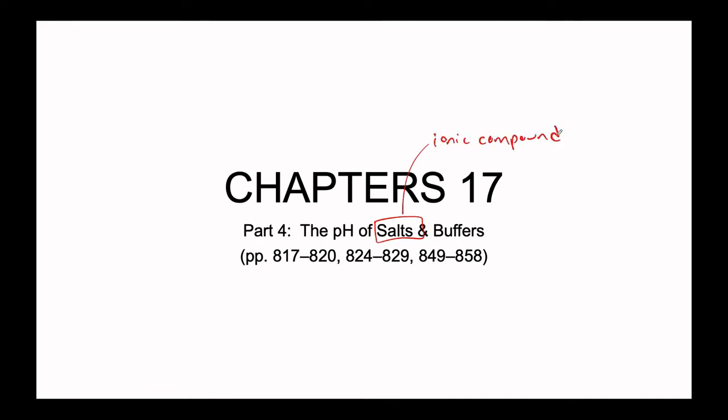Some ionic compounds contain what appear to be acids or bases within the ionic compound, and as such will have an impact on our pH. Second, we'll be talking about what happens when you start mixing your salts and your acids and bases together — like what happens when you start putting common ions in a solution with an acid or a base. Let's get into it and wrap up chapter 17.